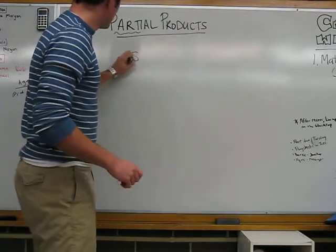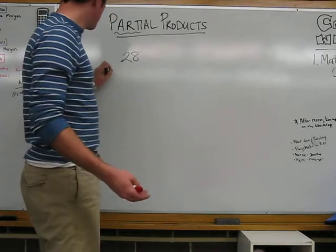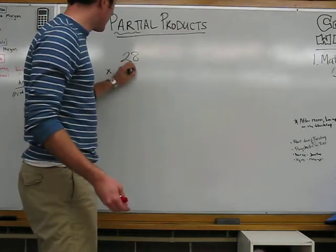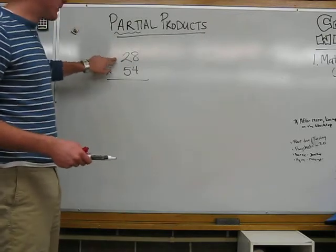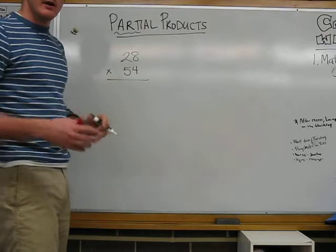So, let's start with the number 28. We're going to multiply that by 54. Now, at first, we see a two-digit number, we see another two-digit number. Here's what we're going to do.